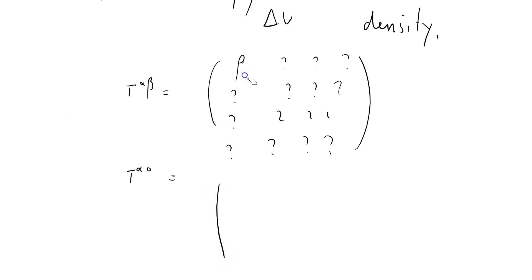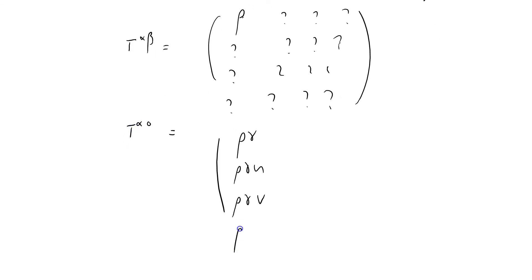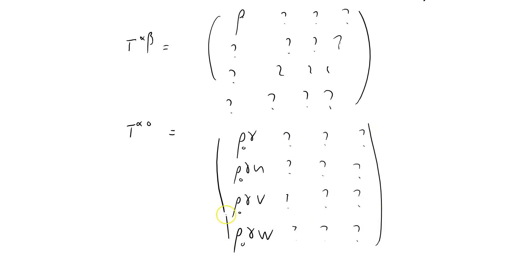So now I'm in a position to start filling in some of the components. Remember T^αβ had only ρ in the T^00 slot and question marks everywhere else. Now we know T^α0 equals the full momentum density. The first column becomes: ρ, ργu, ργv, ργw — where the T^00 component is ρ₀. We still don't know what the remaining components are yet, but it's a good start. We've now determined one full column of the stress-energy tensor.